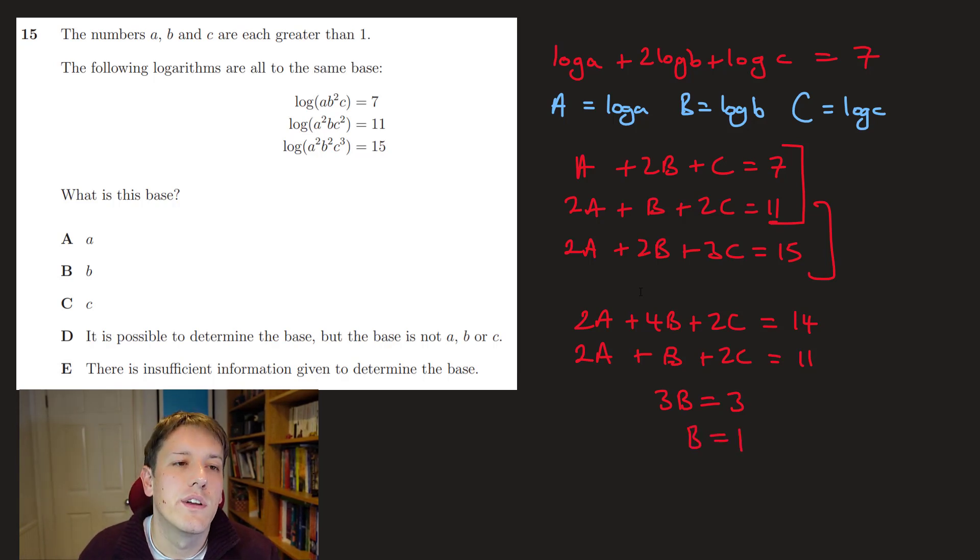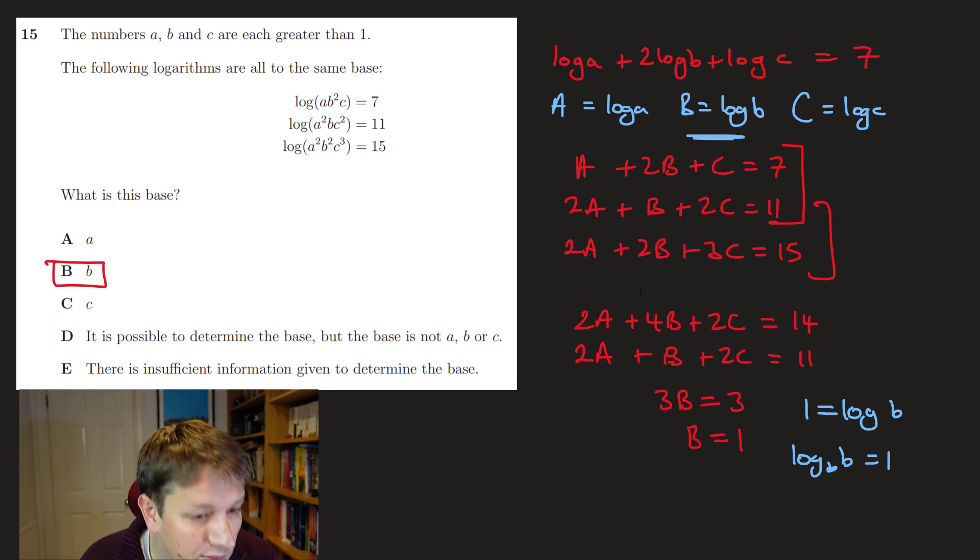Anyway, that means that B equals 1, and then if we go back and think about what capital B is, that means 1 is the logarithm of b. So actually the only way that can be the case is if the base of the logarithm is b. Log b of b is 1, and so the answer to this question is that the base of the logarithm is b, and we don't have to go any further. You could continue to solve these equations if you wanted to, and I think you'd find that A is 2 and C is 3, which also means that log to the base b of a is then 2, so that means that the a is b squared, and similarly the c is b cubed, but we don't have to worry about that here, we've got the answer already.